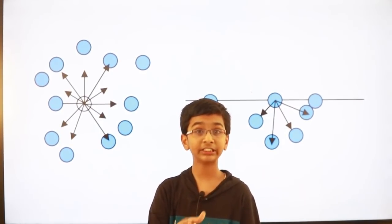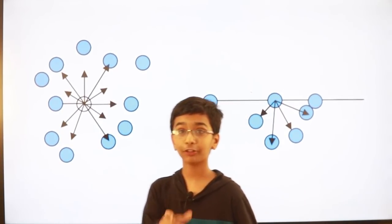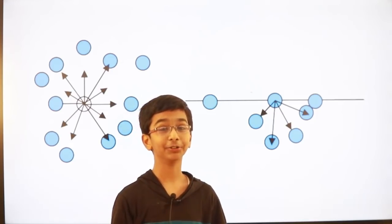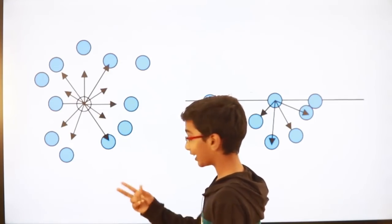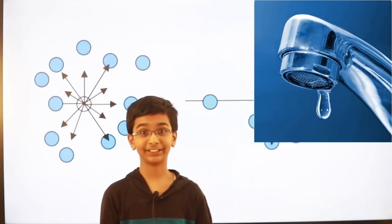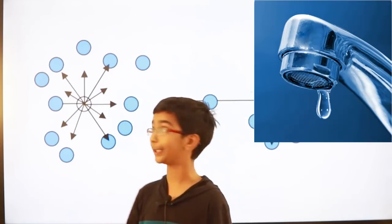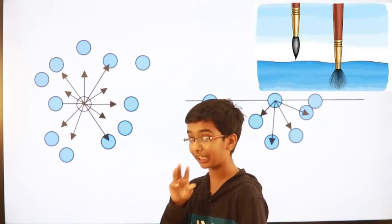If you want to see this example: first example, a spider which is running in the water. Why? It's a membrane. Second example, water droplets. It becomes a sphere. Third example, a paint brush.